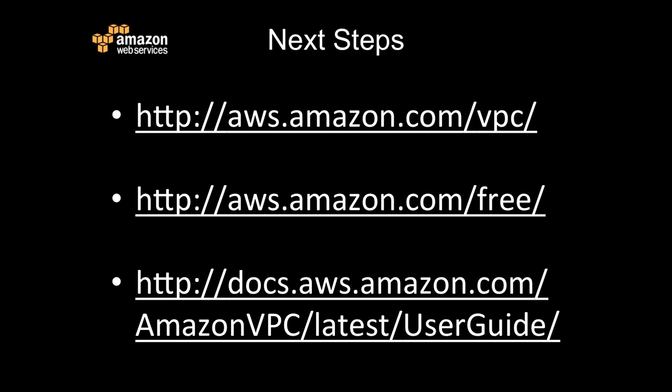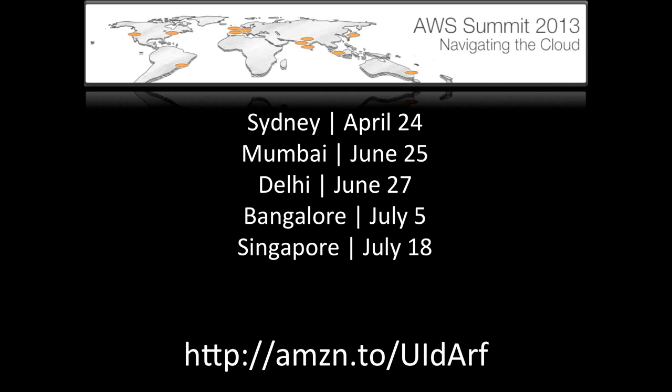The latest user guide is at Amazon VPC slash latest slash user guide. That's going to go into a lot more depth than I could cover in this webinar. I wanted to point out that we have our summits coming across all of APAC. The first one is going to be down in Sydney. We have quite good coverage within India — Mumbai, Delhi, and Bangalore — and we'll also have one in Singapore. Some of these summits are available to sign up for now. Go to the URL at the bottom — the Amazon URL shortener — to either register or sign up.